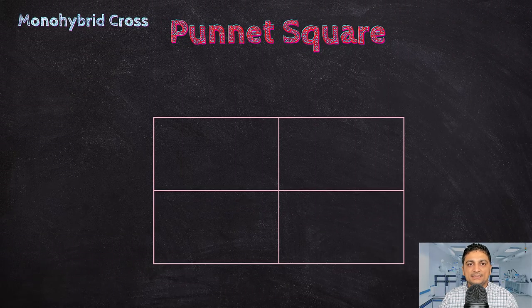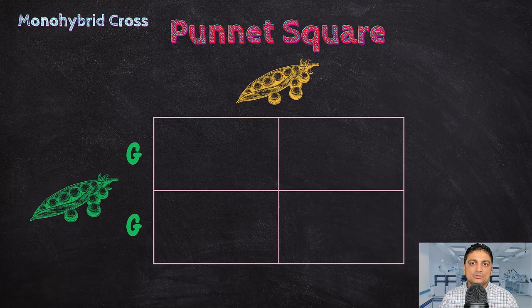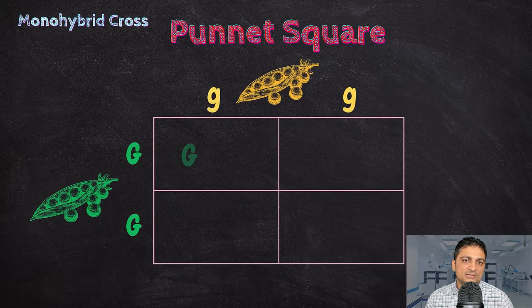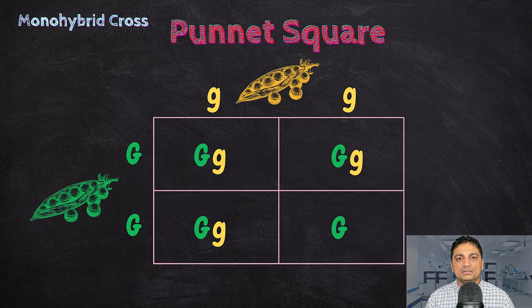To determine the potential offspring we can use a Punnett square by crossing the green pod plant, denoted as uppercase GG, with the yellow pod plant, denoted as lowercase gg. There is only one type of allele combination. All the offspring in the F1 generation will have one copy of the green allele, denoted as uppercase G, which is the dominant allele, and also one copy of the recessive yellow allele, denoted as lowercase g, making them heterozygous for pod color.